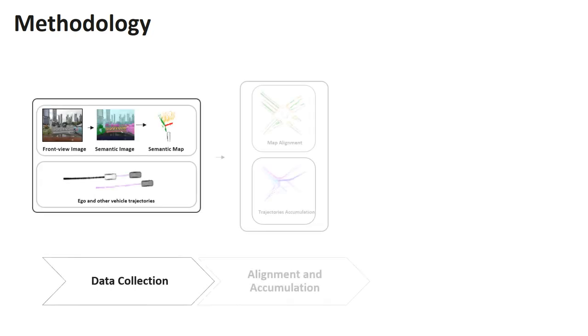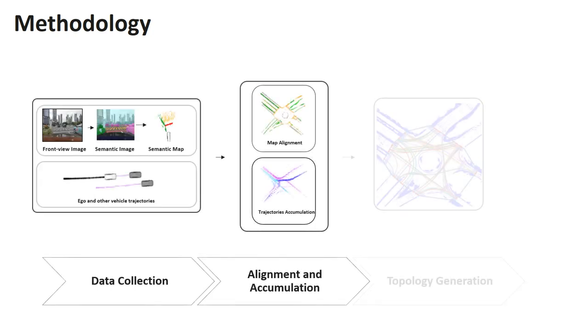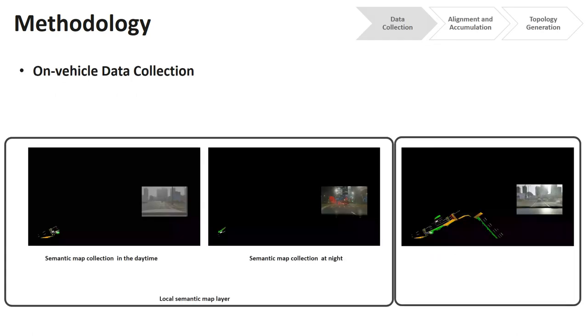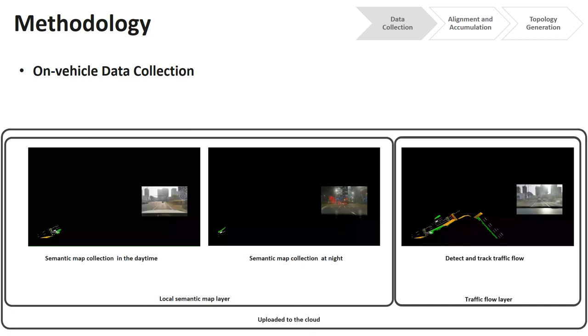We use front-view camera, LiDAR point cloud, and localization information to build local semantic map, which is captured including daytime and nighttime. At the same time, surrounding vehicles are detected and tracked by on-board sensors. Traffic flow is formed, which contains the trajectories of multiple vehicles, including the ego vehicle.